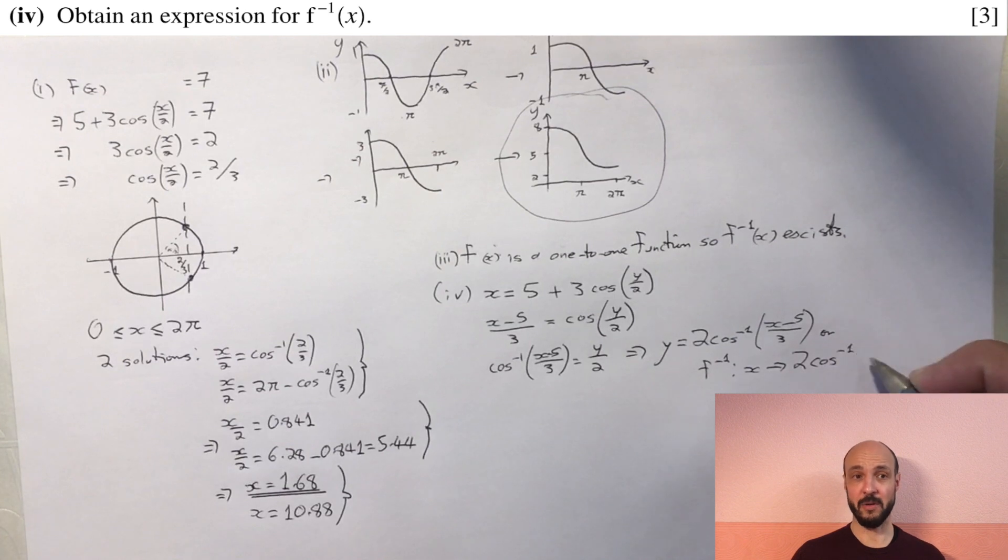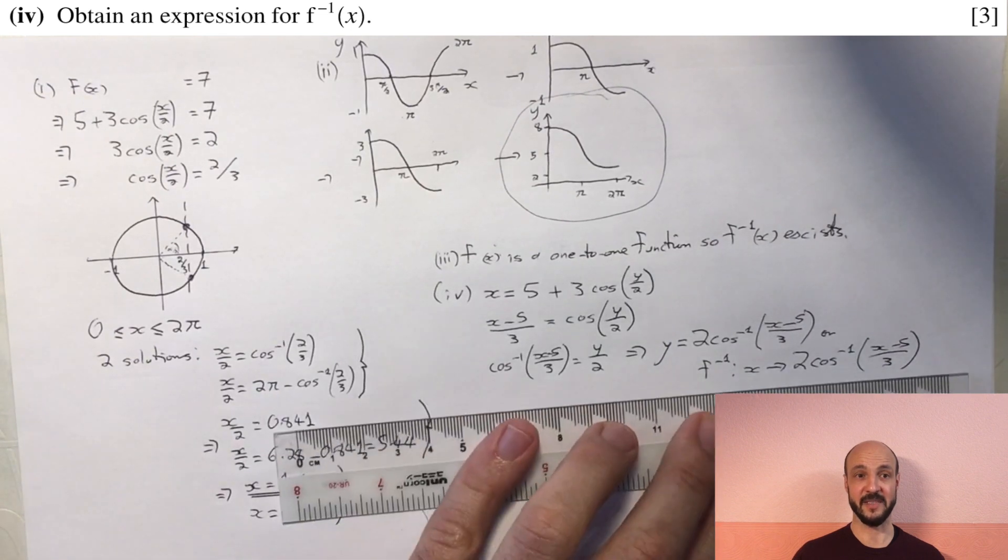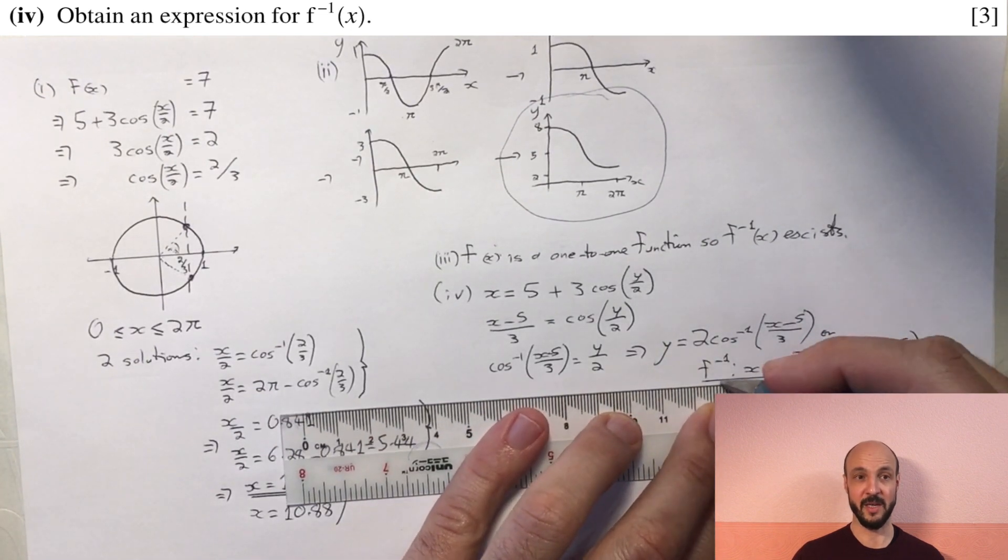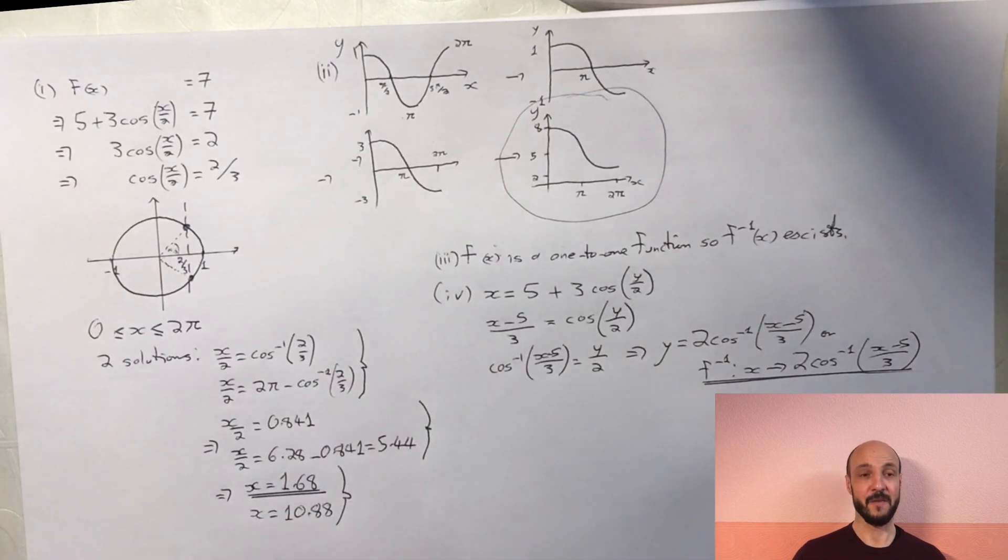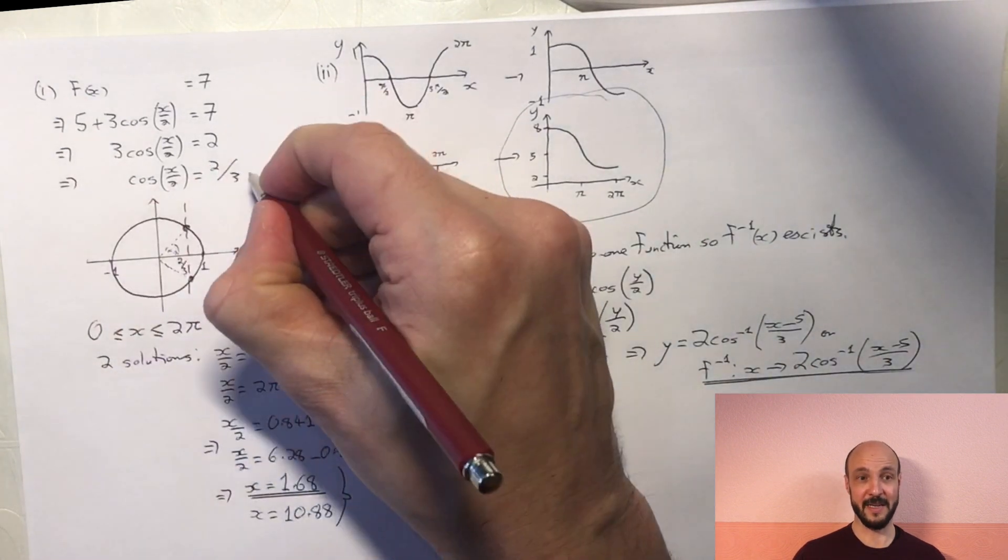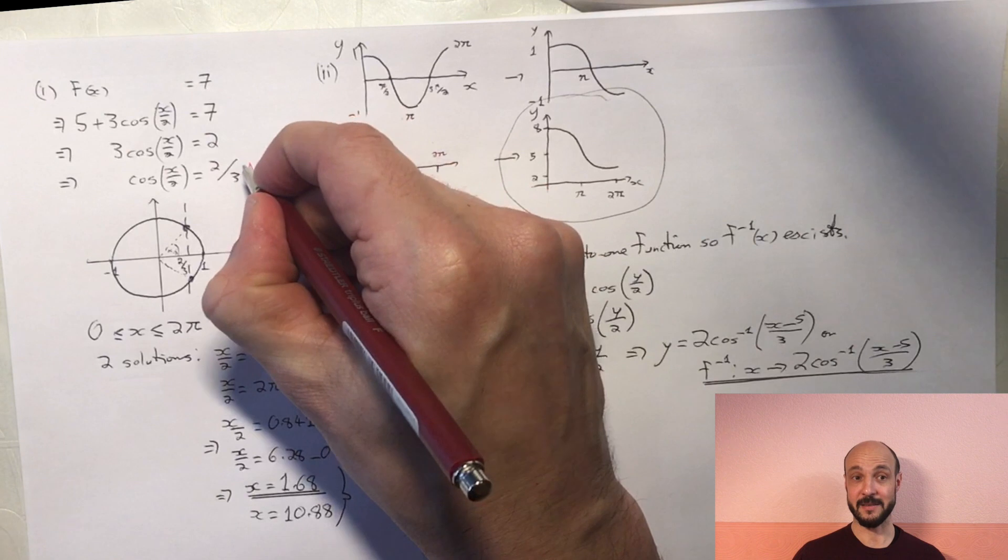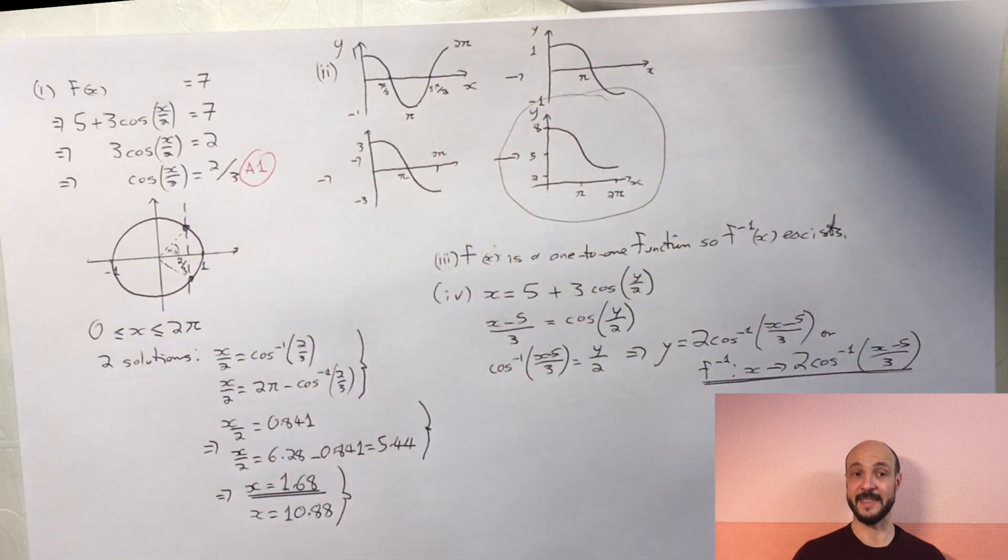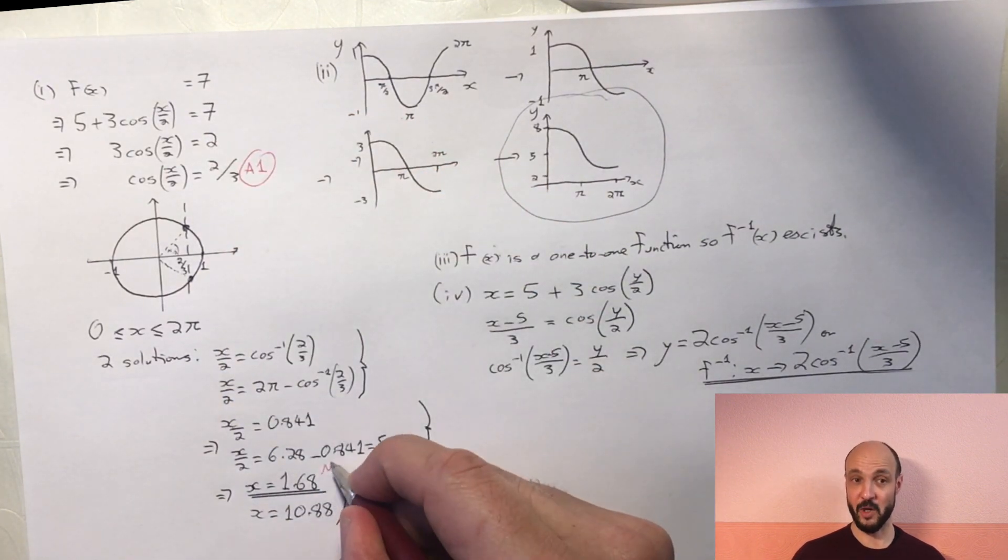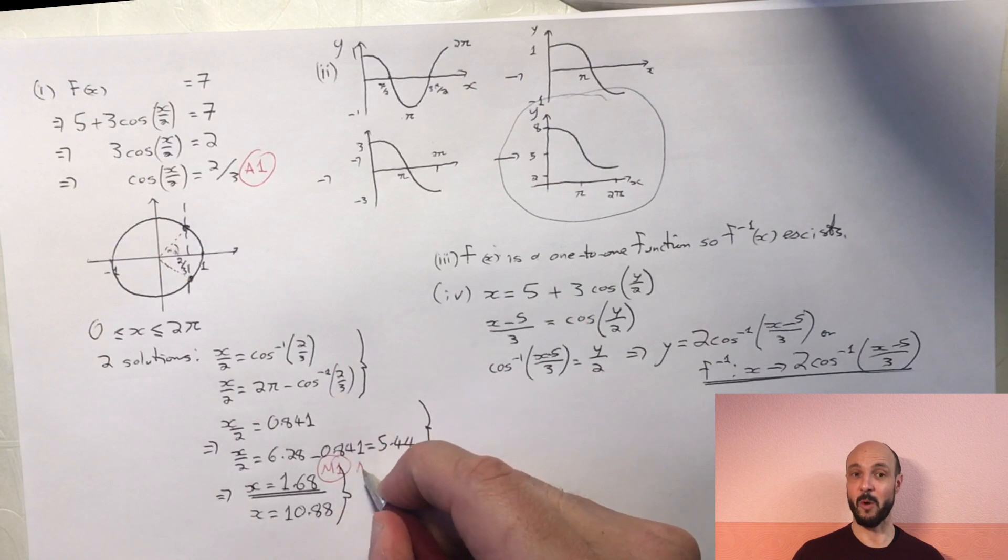So let's go back through and look at where the marks are assigned for this question. We get one accuracy mark for finding that cosine of x over 2 equals 2 over 3. We get a method mark for carrying that through to find the solution for x, and an accuracy mark if we've not got a numerical mistake, then it's 1.68.